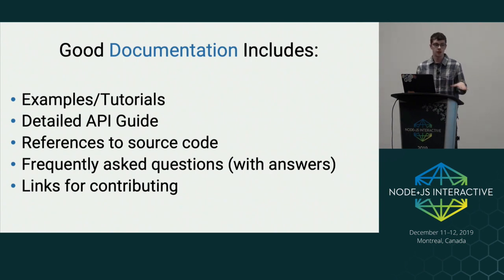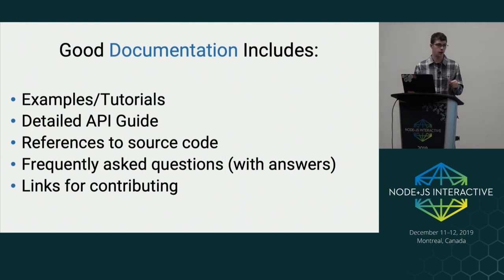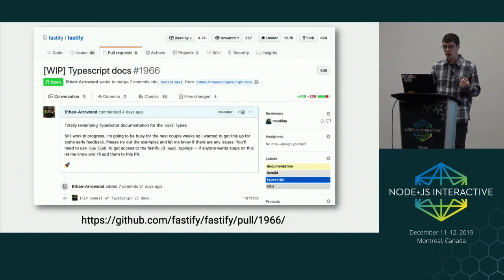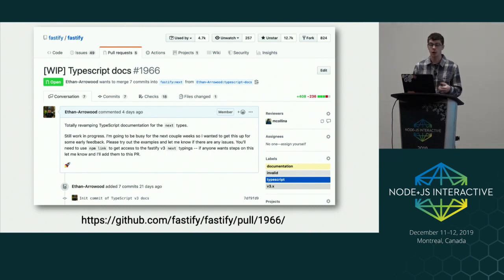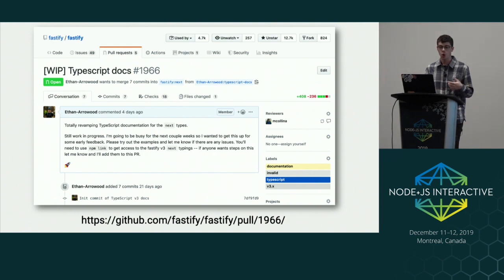Finally, links for contributing. The whole type system wouldn't be where it is without contributions from open source developers. If you're using the types and find an error, it's best to open an issue or submit a PR. Making that an easy process helps users rather than having them dig around GitHub to find the repository or figure out how to open a valid issue. If you're interested in seeing how the docs are coming along, I'm actively working on them right now — there's a PR open on the Fastify repository. The type system I've defined is not available yet; it's going to be in the next branch, released as version three in 2020. You can try it using npm link locally or by importing the next branch directly.